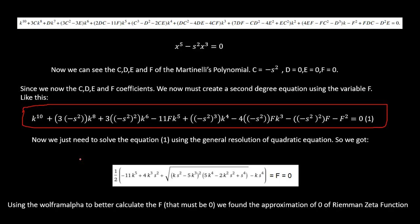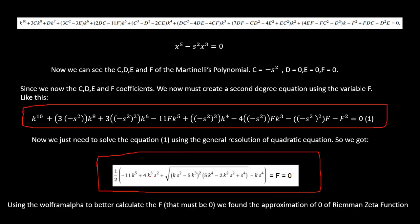Using the general resolution of the quadratic equation, we can solve this equation. Using Wolfram Alpha, we get the solution for f. Using k and setting s equal to f — which equals 0 — we use Wolfram Alpha to calculate f. The result must be 0: we found the approximation of f equals 0 of the Riemann zeta function.